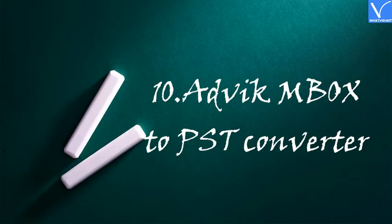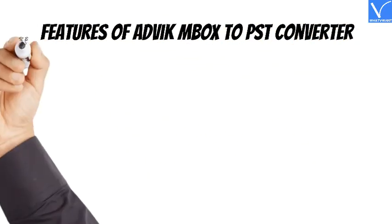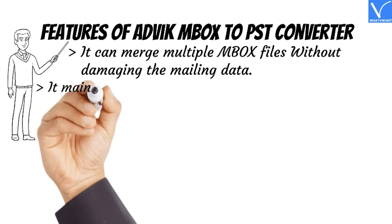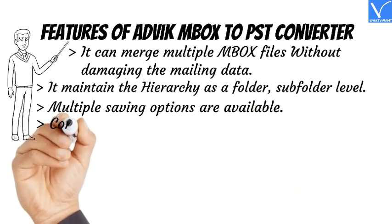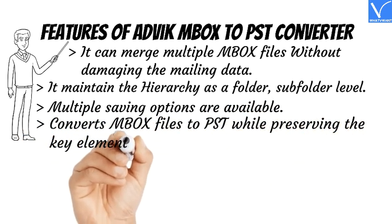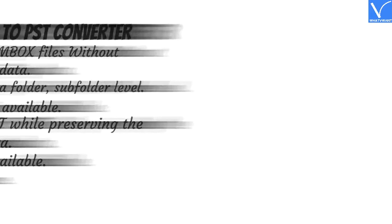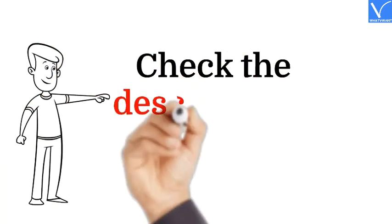Number 10: ADVIC MBOX to PST Converter. ADVIC MBOX to PST Converter is a multifunctional program that converts and exports MBOX files to many other formats. It supports all versions of Windows. Features: Can merge multiple MBOX files without damaging mailing data. Maintains folder and subfolder hierarchy. Multiple saving options are available. Check the description for the product link.